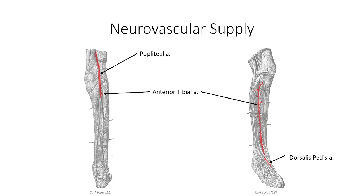Alternatively, the capillary refill test for the nail bed of the great toe may also provide indications of vascular compromise. The lateral compartment does not have its own exclusive blood supply, but instead receives numerous perforating branches from the fibular artery that supply the fibularis longus and brevis muscles.